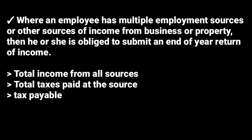Employees deriving income from more than one source are required to complete an end-of-year return to declare their total income from all sources, including business income. It must also show the total taxes paid at the source, such as PAYE, withholding tax, or provisional tax — excluding presumptive tax and rental tax paid by such an employee. It must also show the tax payable.